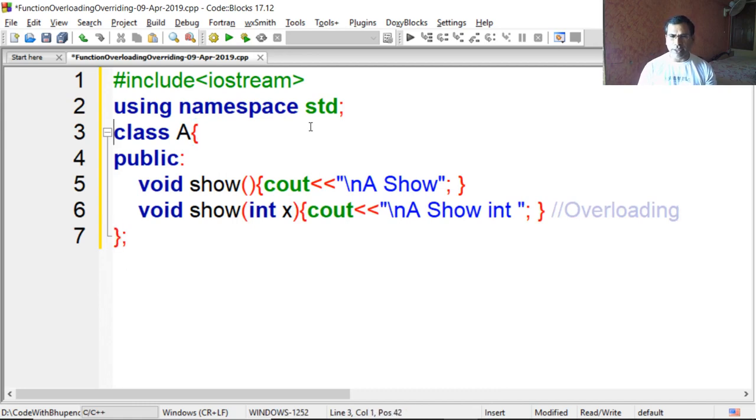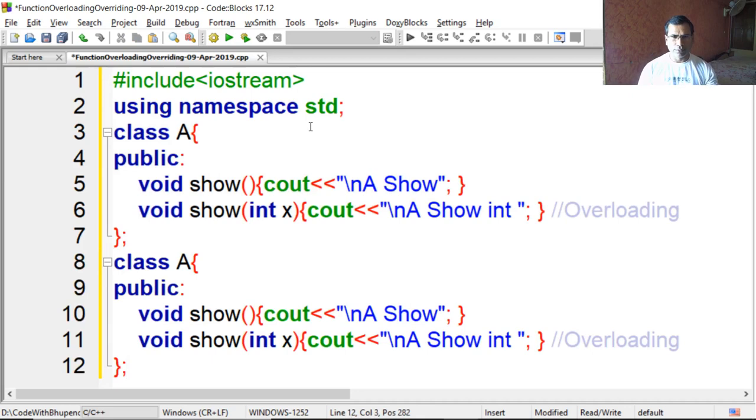Again I have to create class B which inherits class A. So class B inherits A. Again show function but it says B show. So this is overriding.